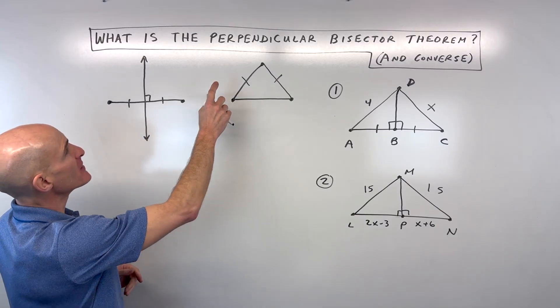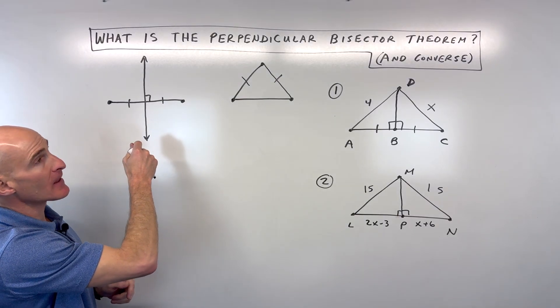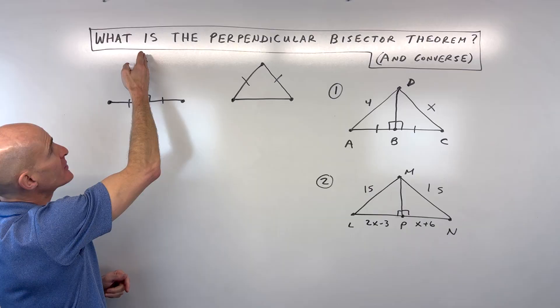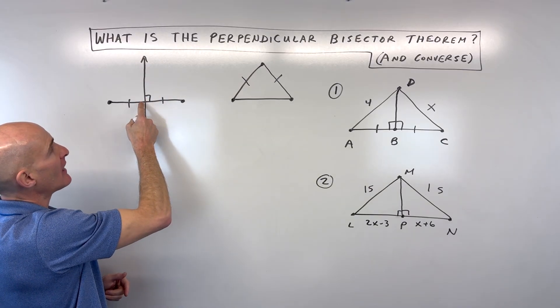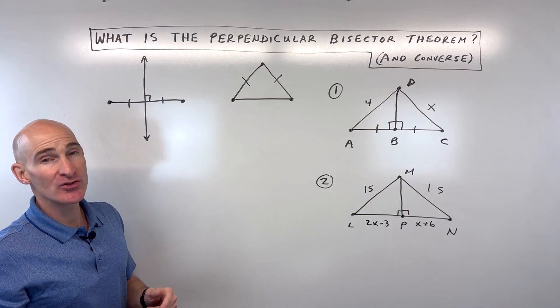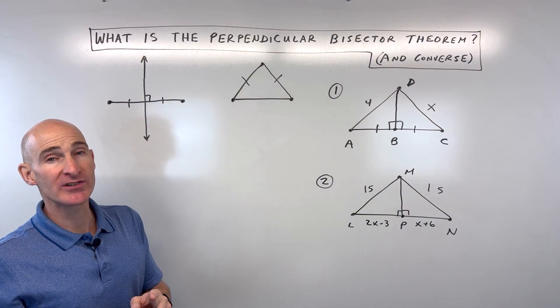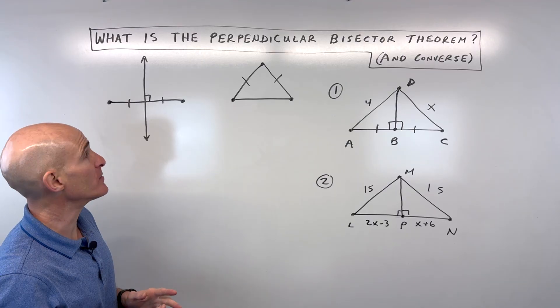When we talk about a perpendicular bisector, what does that mean? Perpendicular means it's at a right angle. Bisect means it cuts it into two equal parts — it cuts a segment in half and goes right through the midpoint.